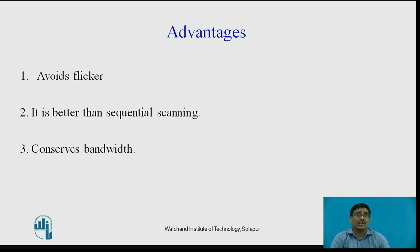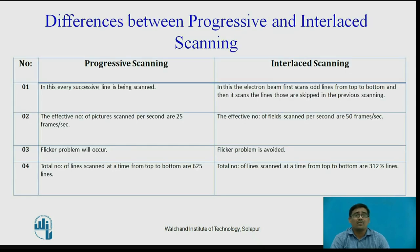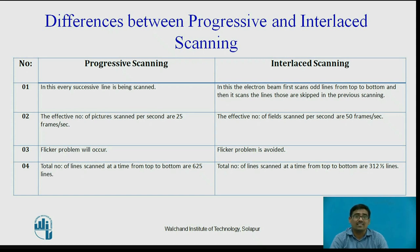The advantages of interlaced scanning are: it avoids flicker, it is better than sequential scanning, and it conserves bandwidth. The difference between progressive and interlaced scanning: in progressive scanning every successive line is scanned, while in interlaced scanning the odd lines are scanned first from top to bottom, then the even lines fill in the gaps. Progressive scanning gives 25 frames per second while interlaced scanning requires 50 frames per second. Flicker occurs in progressive scanning but is avoided in interlaced scanning. Progressive scanning scans 625 lines at a time; interlaced scanning scans 312.5 lines per field.